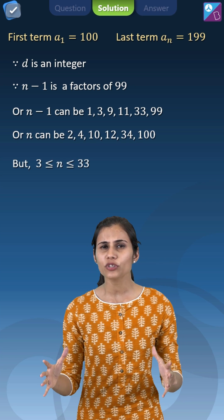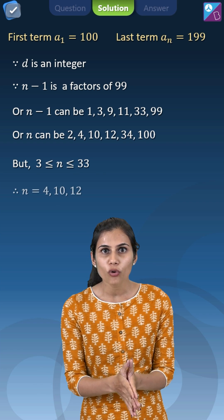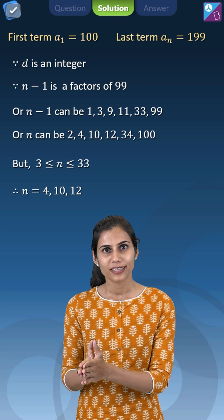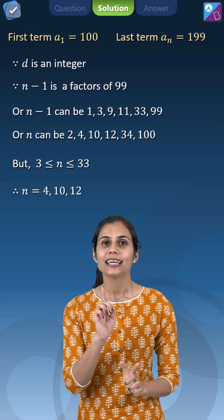But n is sandwiched between 3 and 33. So acceptable values of n will be 4, 10 and 12. That means acceptable values of n minus 1 will be 3, 9 and 11.